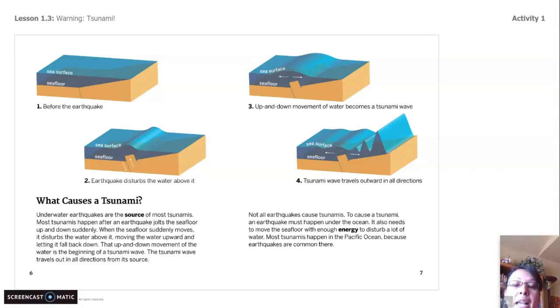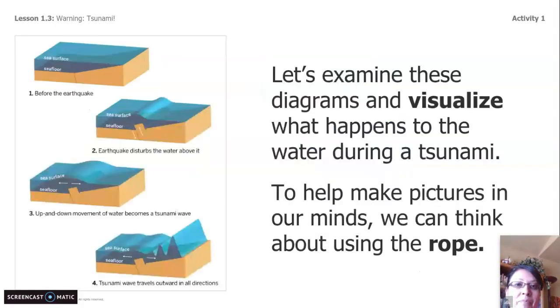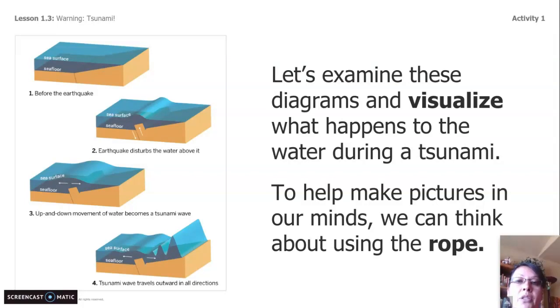Most tsunamis happen in the Pacific Ocean because earthquakes are very common there. Now we're going to look at the diagrams and visualize — making a mental picture of what happens to the water during a tsunami.